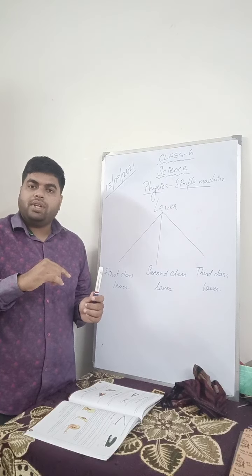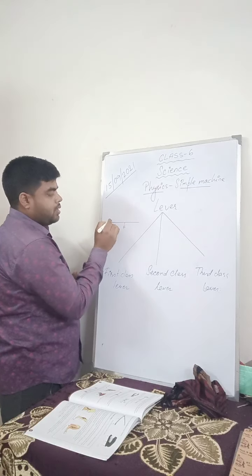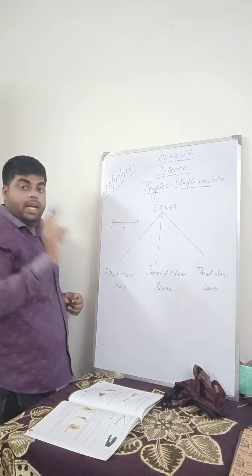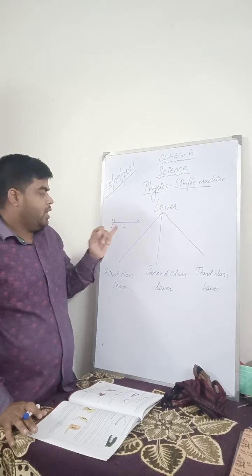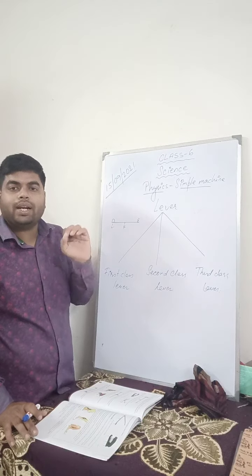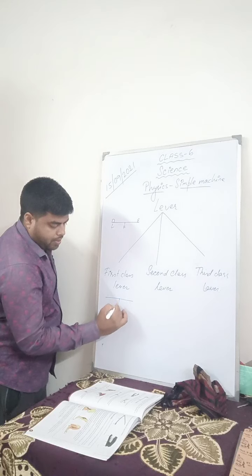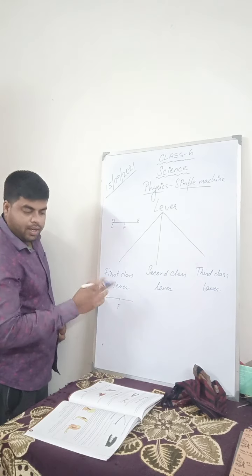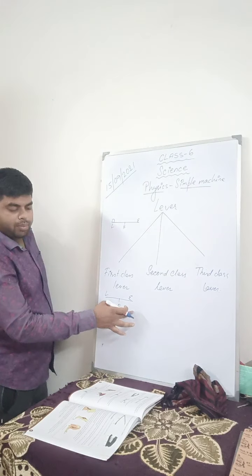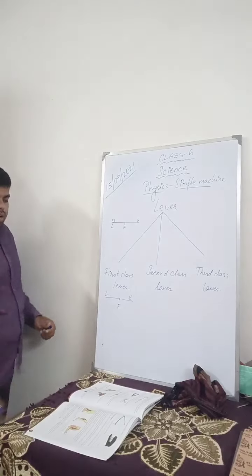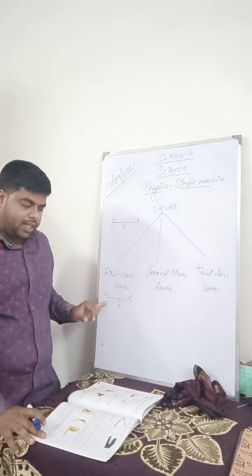We have studied about the working of the lever. In the lever, there is the fulcrum, and on either side there is the load and the effort. A simple lever is divided into 3 categories on the basis of the presence of the fulcrum — where is the fulcrum present? In the first class lever, the fulcrum is present in the middle, and either side will be your load and effort.